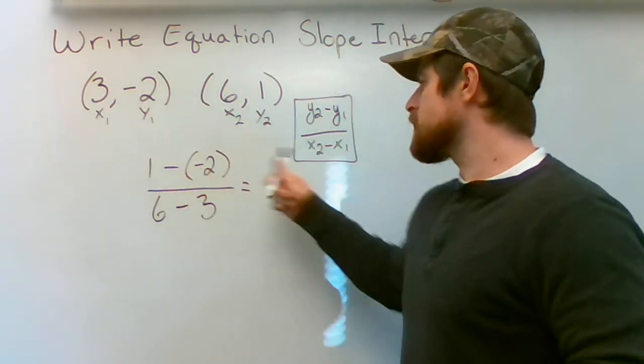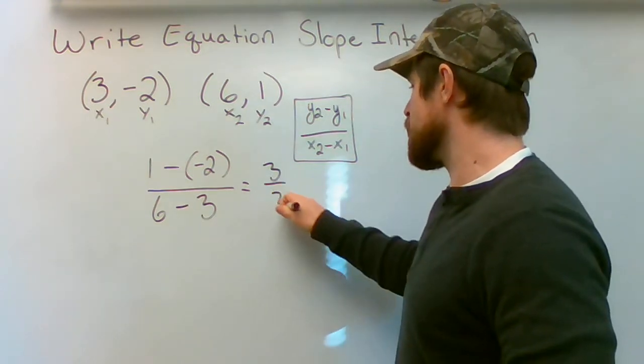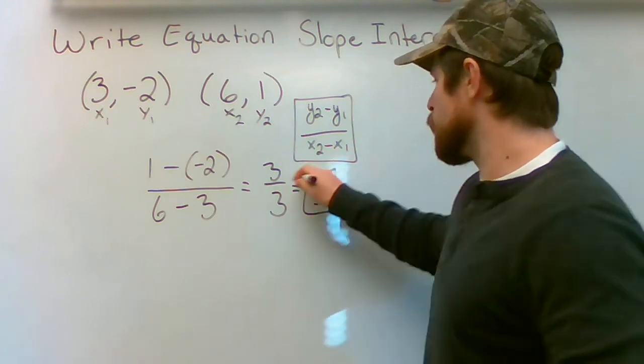And I'm going to get 1 plus 2 which is 3 over 6 minus 3 which is 3. Simplify that down. I now know my slope is 1.